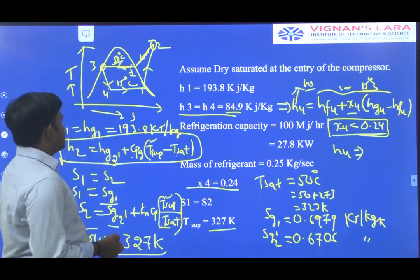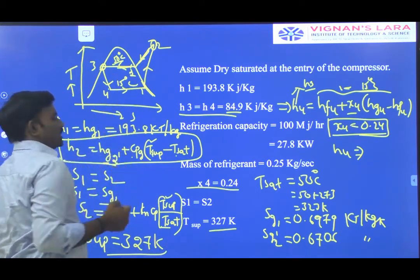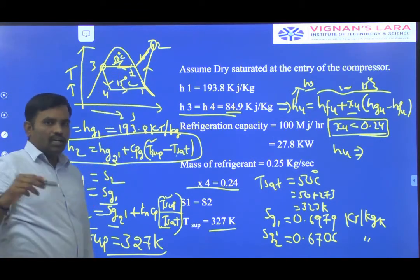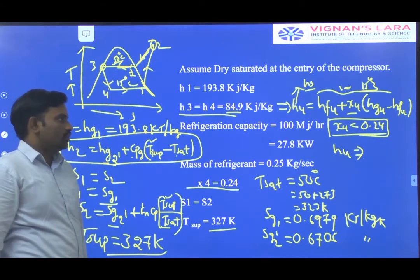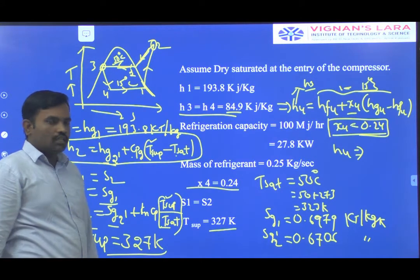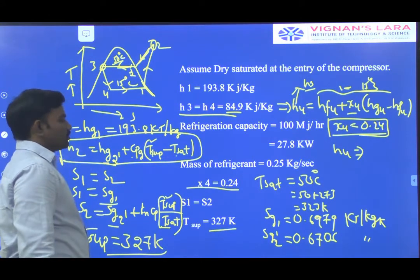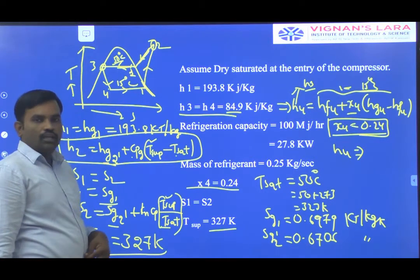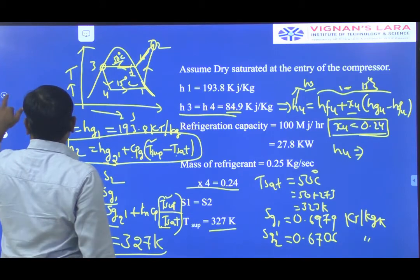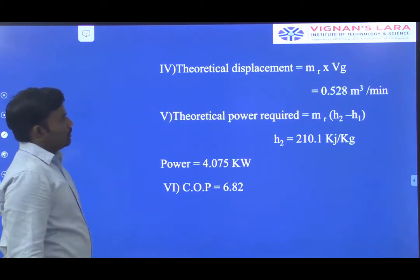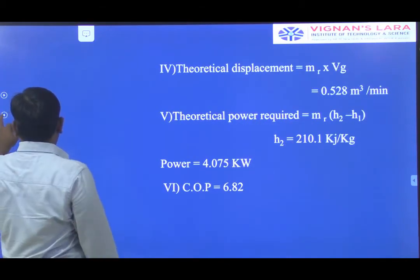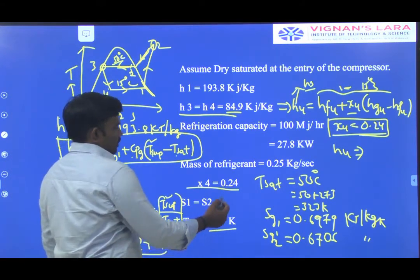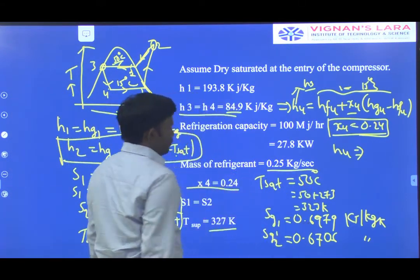So up to now we have calculated H1, H2, H3, and H4. All four enthalpies in the VCR cycle are now known. With the help of these four enthalpies, we can easily evaluate the performance parameters of the VCR system. The first parameter is mass of refrigerant, which is 0.25 kilogram per second.